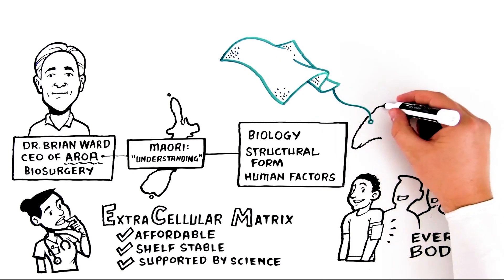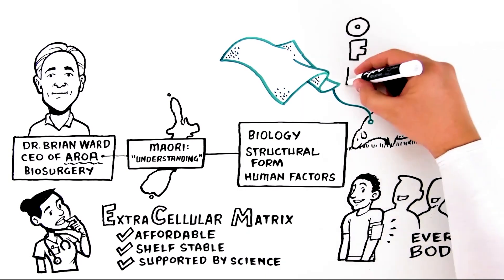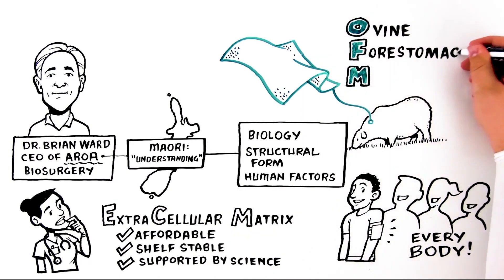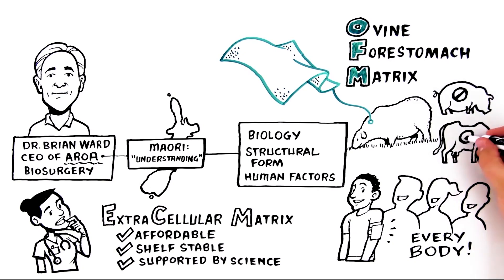Aroa Biosurgery uses the forestomach of sheep to create endoform. Ovine forestomach matrix. It's not porcine, not bovine, but it's ovine.